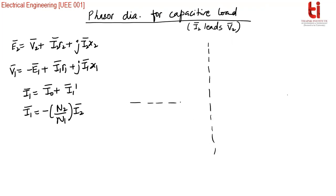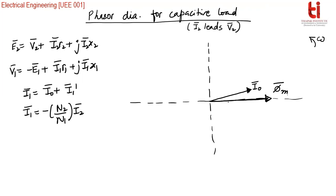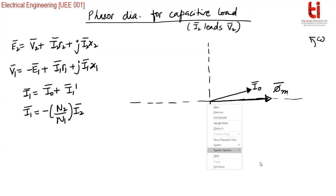We first make four quadrants, mark the angular frequency, then draw the mutual flux phi m bar along the positive x-axis as the reference phasor. The no-load current I0 is leading the flux since it is non-ideal. The angle between them is the hysteric angle. You can also resolve this into IC and IM, but that is not normally required. Then we draw E1 along the negative y-axis.